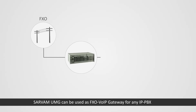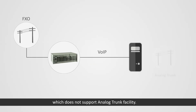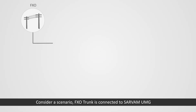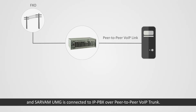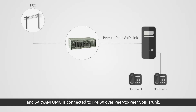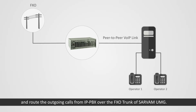Servum UMG can be used as an FXO VoIP gateway for any IP PBX which does not support analog trunk facility. Consider a scenario where an FXO trunk is connected to Servum UMG, and Servum UMG is connected to IP PBX over a peer-to-peer VoIP trunk. Servum UMG will direct incoming calls on FXO trunks to the operator of IP PBX and route the outgoing calls from IP PBX over the FXO trunk of Servum UMG.